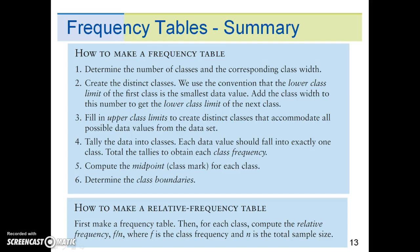There are 6 steps to creating a frequency table. First, determine the number of classes and the corresponding class width. Second, create the distinct classes. We use the convention that the lower class limit of the first class is the smallest data value, and add the class width to this number to get the lower class limit of the next class.